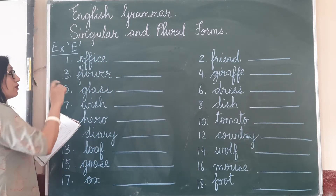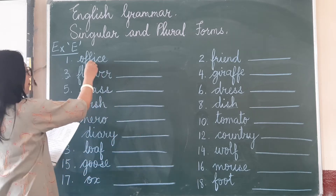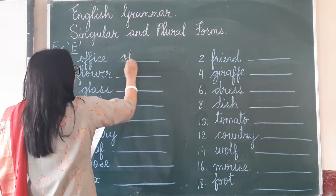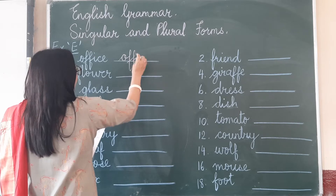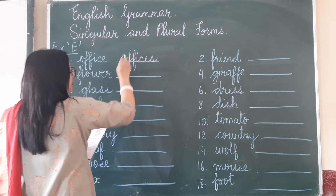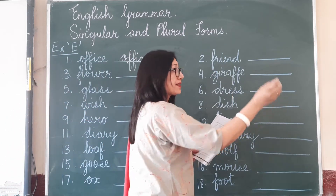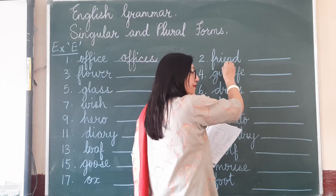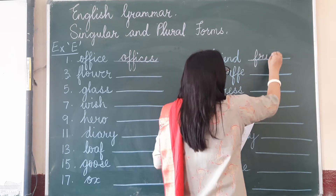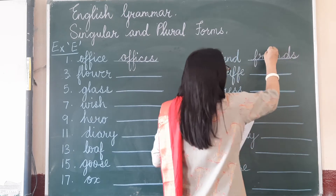Now, some nouns you just add an S. So 'office' changes into 'offices' — O-F-F-I-C-E, you add S. 'Friend' becomes 'friends' — one friend, many friends. Add an S: F-R-I-E-N-D-S, friends.